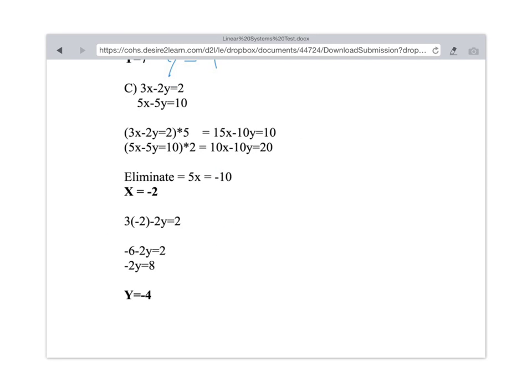Okay, so for question C, you've done a great job here in recognizing that you needed to multiply the first equation by 5, and the second equation by 2, in order to solve this and set it up for an elimination solution. And if we subtract equation 1 and equation 2, then you end up with 5x equals negative 10, x equals minus 2, that's correct.